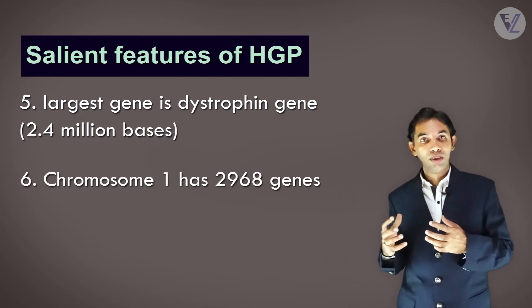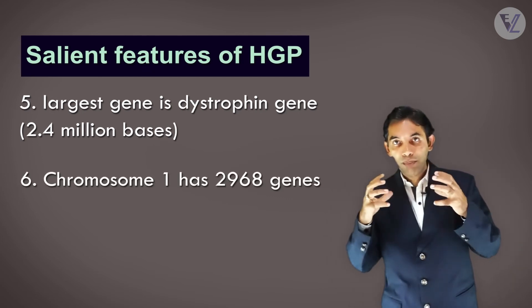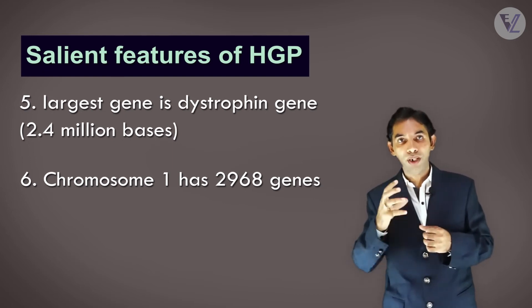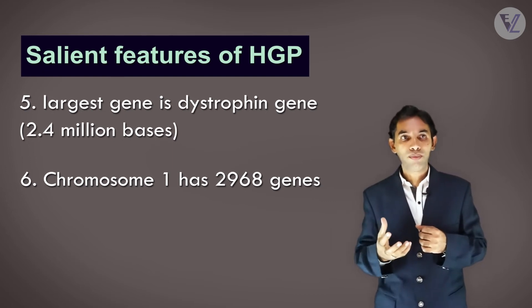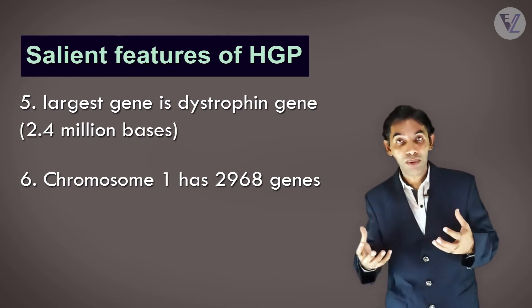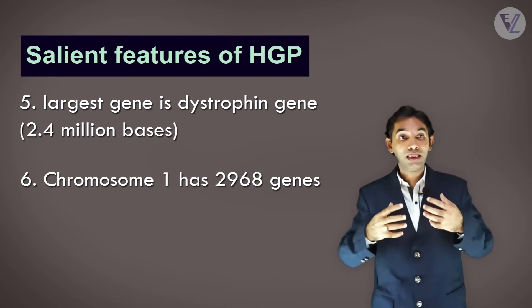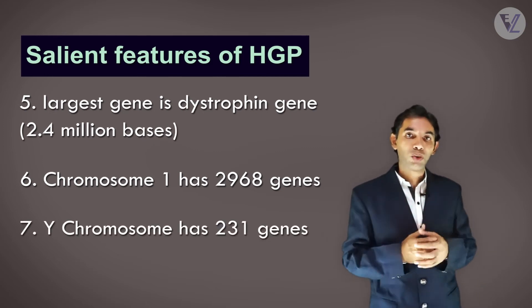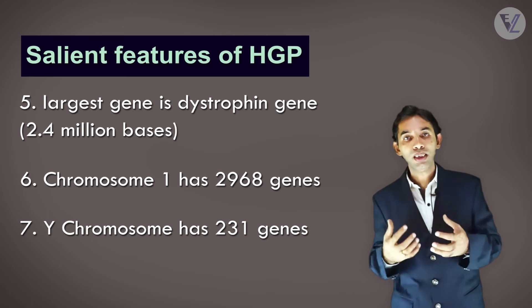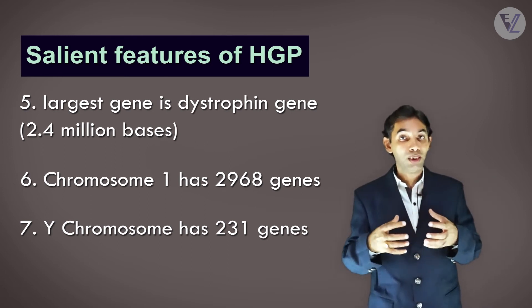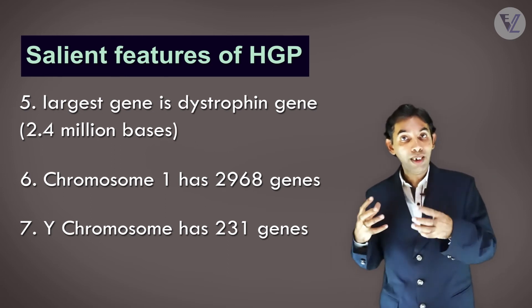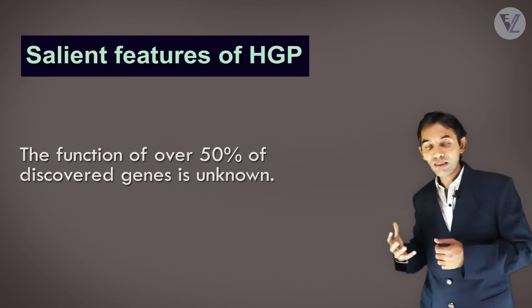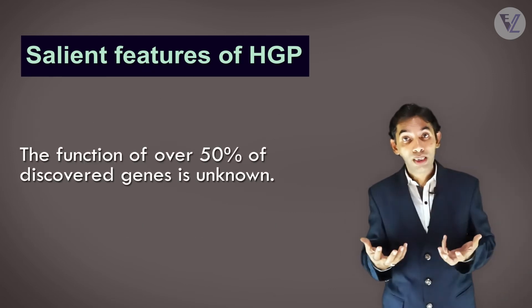Out of the 23 pairs of chromosomes, or 46 chromosomes total, chromosome number one has the maximum number of genes — 2,968 genes. The Y chromosome, the sex chromosome present in males, has only 231 genes.